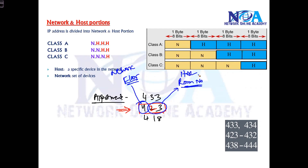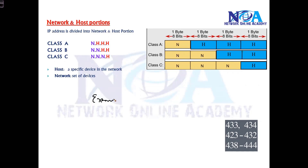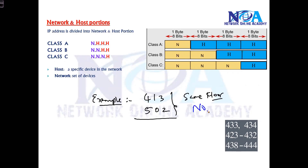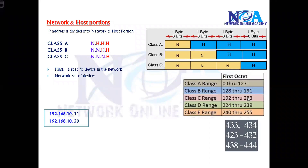Based on this, we can identify which network a device belongs to — just like the network portion identifies which network it belongs to, and the host portion identifies the exact IP of that particular device. For example, do flat 413 and flat 502 belong to the same floor? No — because the first number differs: 4 versus 5. But 433 and 412 are on the same floor because the floor part is the same. Similarly, the network portion must be the same for devices to be on the same network.